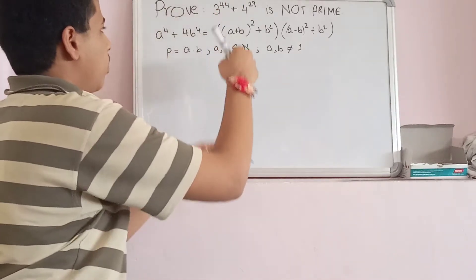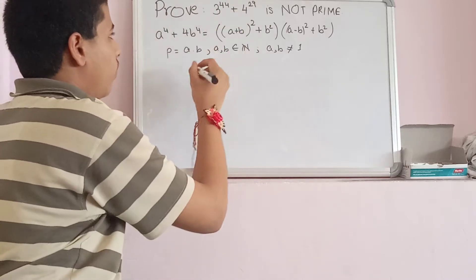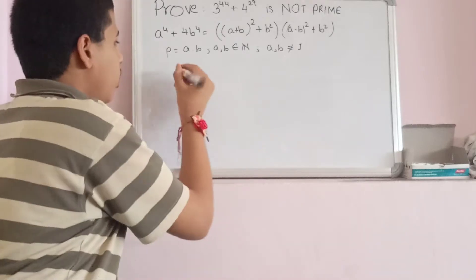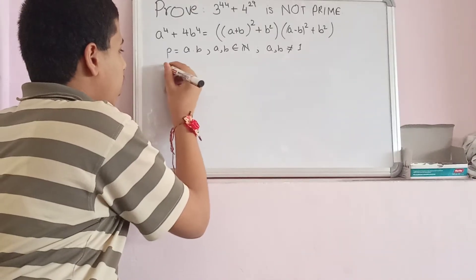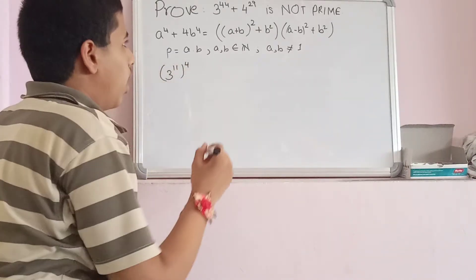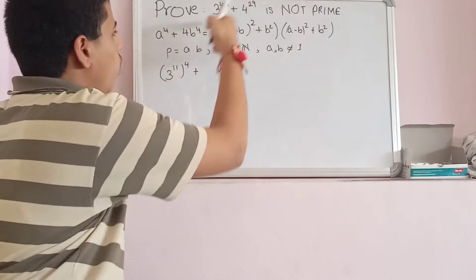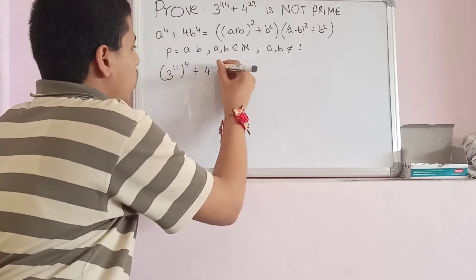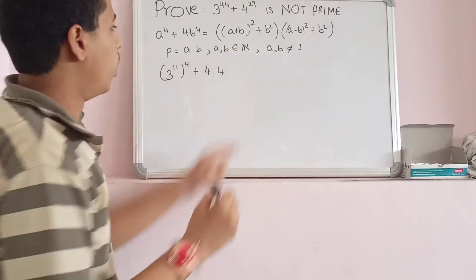Let's write this in the form of Sophie Germain identity. What is 3 to the power of 44 raised to? In fact, 3 to the power of 44 is (3^11)^4, plus 4 to the power of 28, which is (4^7)^4.